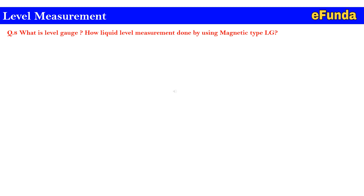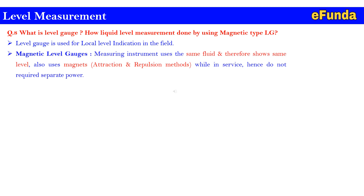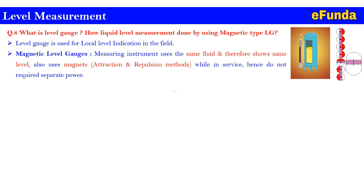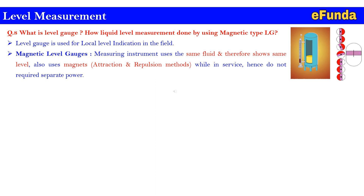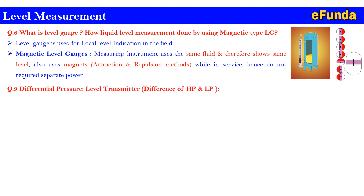Question 8: What is a level gauge and how is liquid level measurement done by using a magnetic type level gauge? A level gauge is used for local level indication in the field. Magnetic type level gauges use the same fluid and use magnets for attraction and repulsion while in service, hence do not require separate power. One can see the animations showing how the attraction and repulsion principle is employed for liquid level measurement.